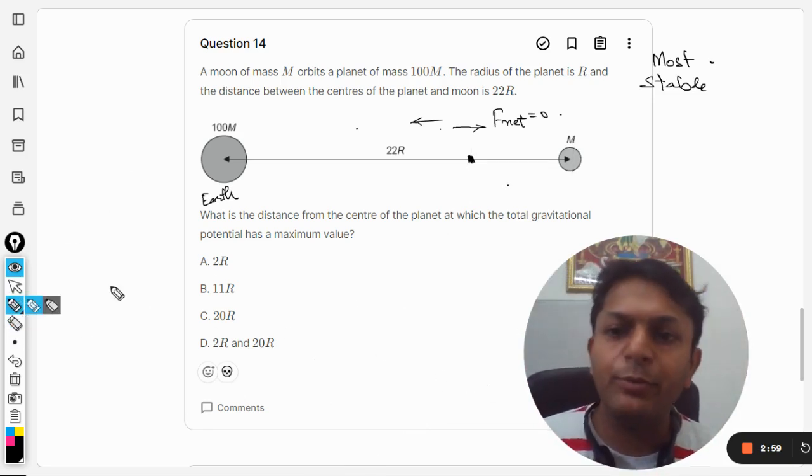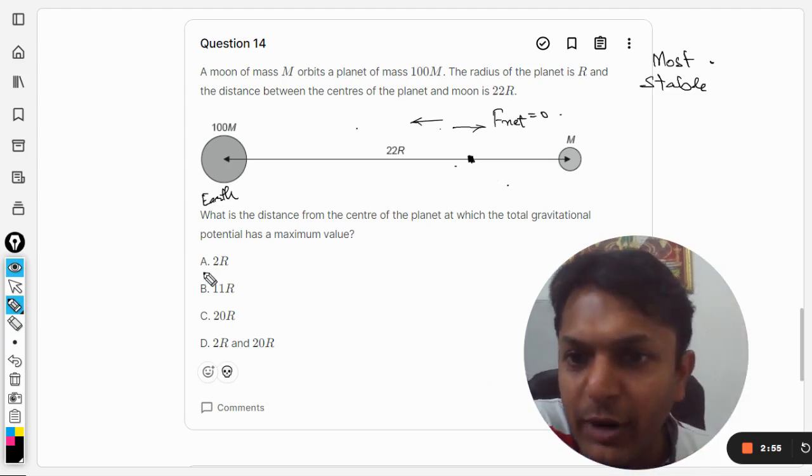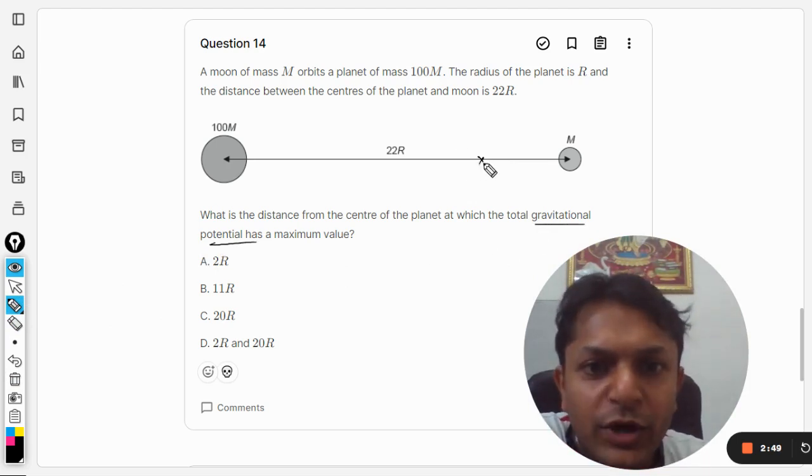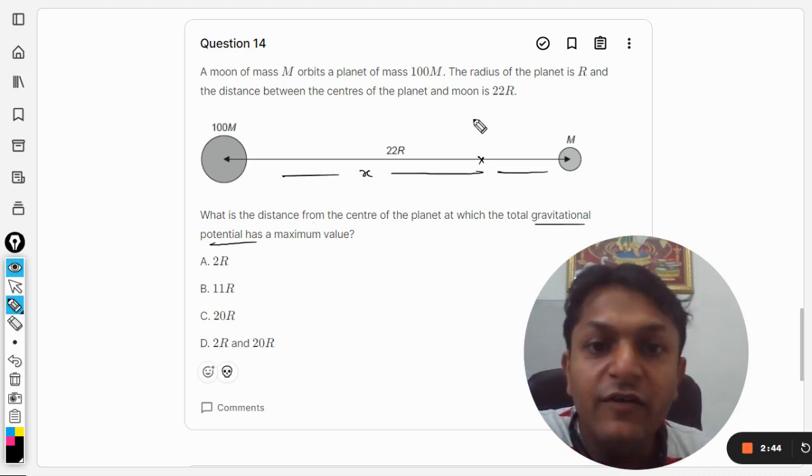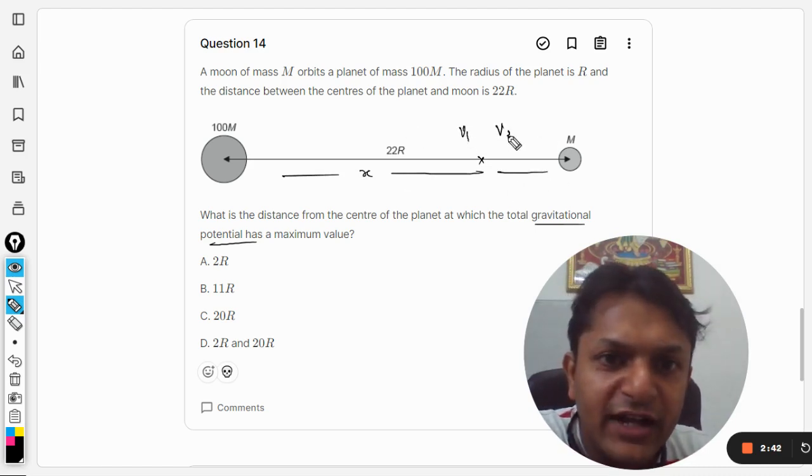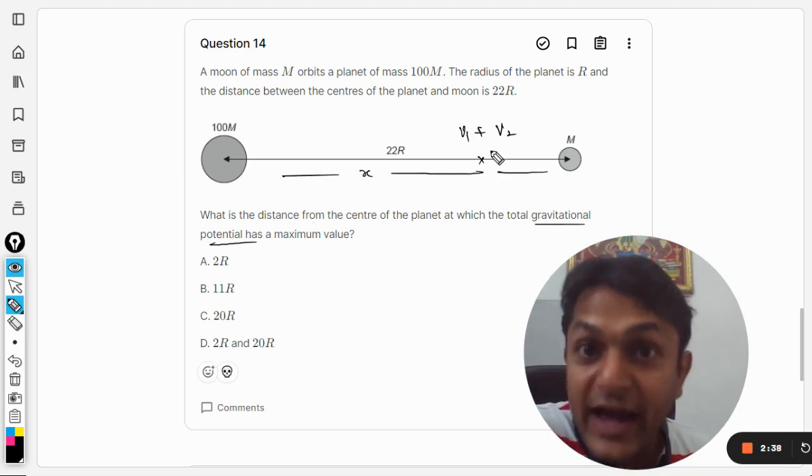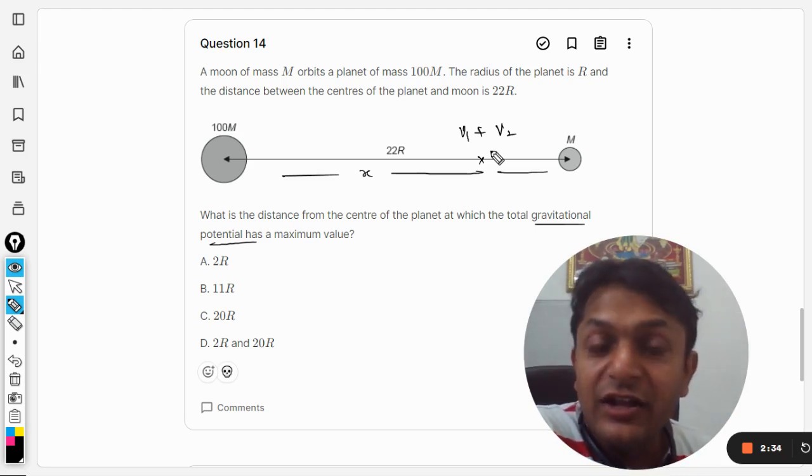So it's a very important position. Anyways, so this is that position they're talking about. Now the question is about the gravitational potential, so it means that this distance is x, this will be 22r minus x. We would be finding V1, we would be finding V2, we will add them, and then we will create a function in terms of x.